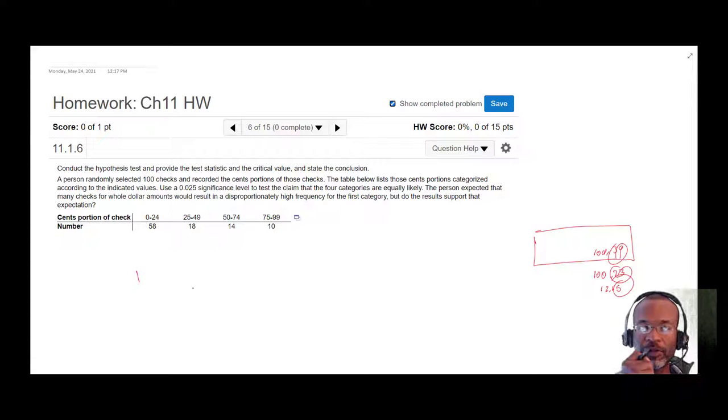If it's perfectly random, if the category—the cents portion between 0 and 24—is just as likely as the other categories, for those 100 checks then you would expect these values to all be the same: 25, 25, 25.